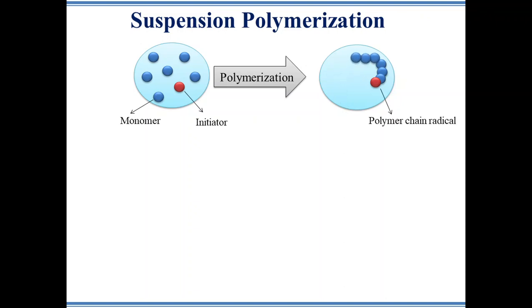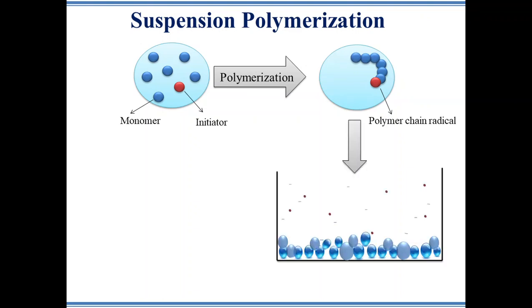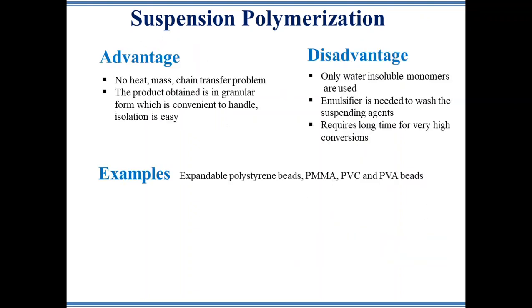The polymerization is carried out inside the small droplet of liquid monomer. Finally, the polymer chain radicals undergo termination step and form a bead-like polymer. The advantage of this method is no heat, mass, or chain transfer problem. The product obtained is in granular form which is convenient to handle and isolation is easy.